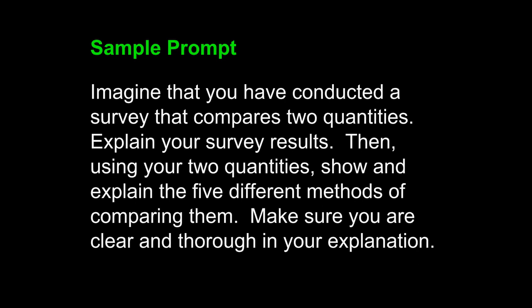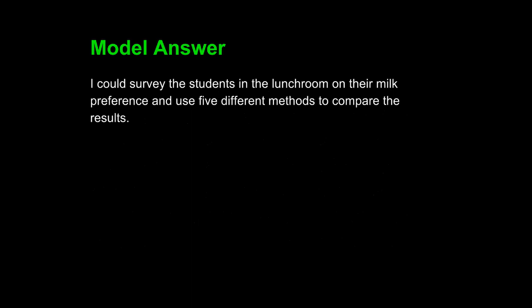Explain your survey results. That is asking you to do something. Then, using your two quantities, show and explain the five different methods of comparing them. That is also showing you to do something. So those two sentences are key in understanding how to frame the topic sentence. Let's look at, then, using your two quantities, show and explain the five different methods of comparing them. I could write a first sentence like this: I could survey the students in the lunchroom on their milk preference and use five different methods to compare the results.